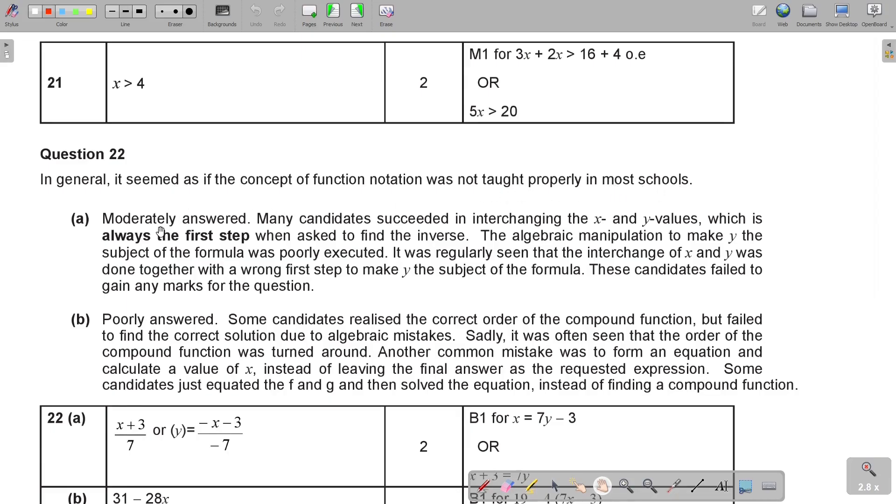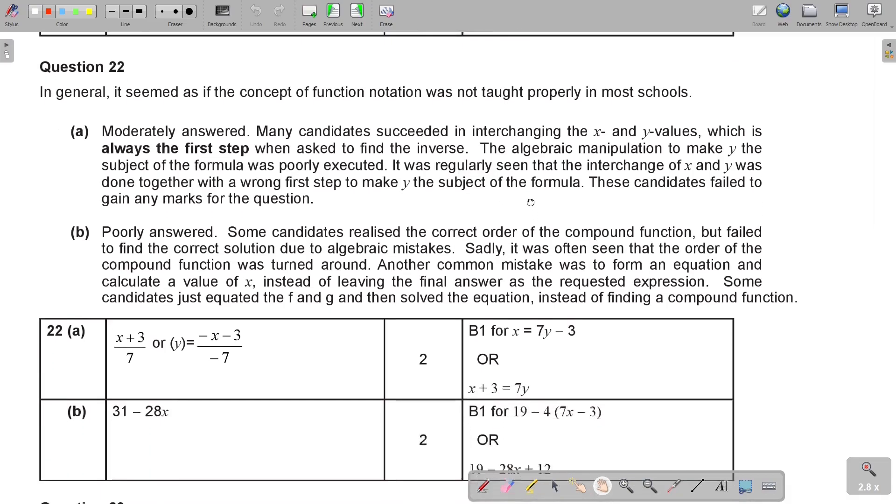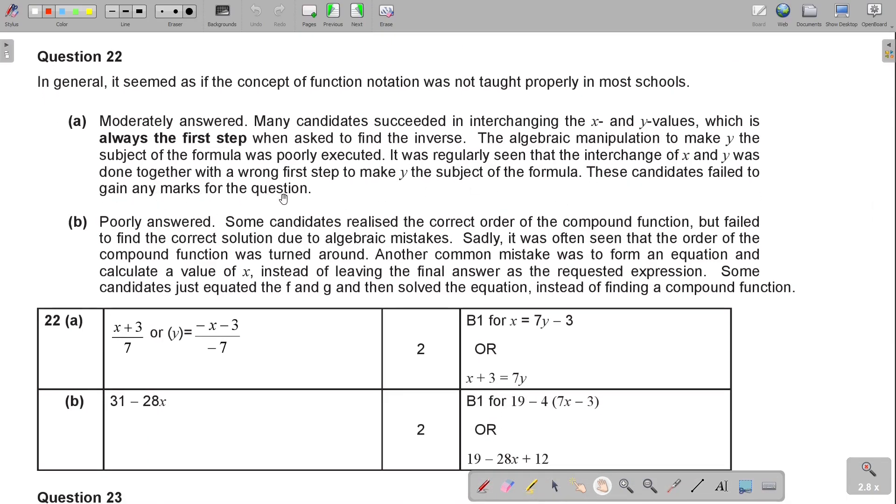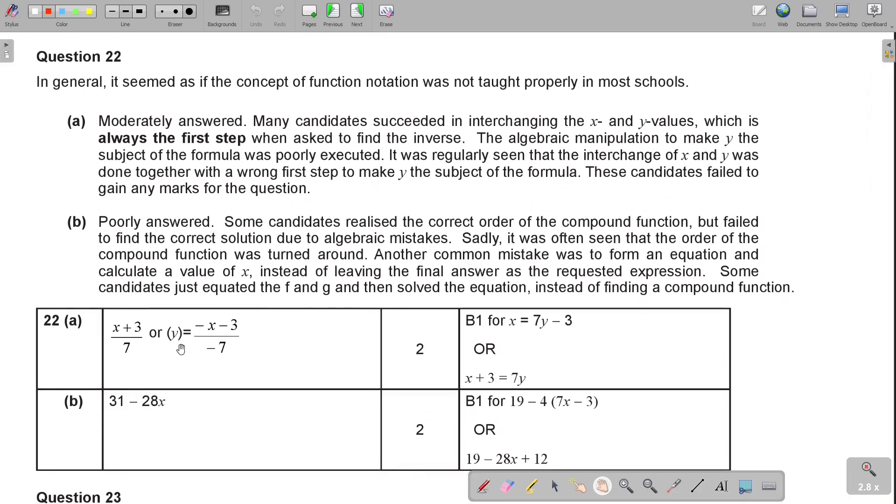So question A is the inverse function. It's moderately answered. Many candidates succeeded in interchanging the x and the y values, which is always the first step when asked to find the inverse. The algebraic manipulation to make y the subject of the formula was poorly executed. It was regularly seen that the interchange of x and y was done together with a wrong first step to make y the subject of the formula. These candidates failed to gain any marks for the question. So if I can give you advice, don't do too many things in this. First, just put the y. Then change the y into the x. Maybe you can get a mark. And we will see now. Yes. So basically, for just getting up to there, you already got one mark. And it seems to me there was not so strict on the g minus 1 x, but they are very strict in AS level. So it's always good to rather know the fine details and the mathematical concepts because it's just going to save you if you go further in mathematics.